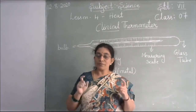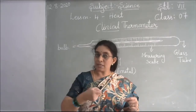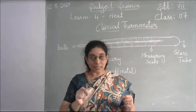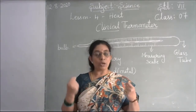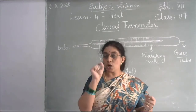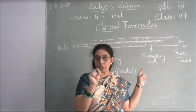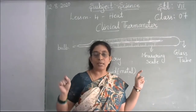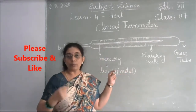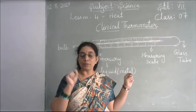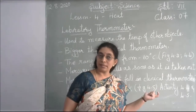Nowadays we have digital thermometers where you don't need to keep it in your mouth — you can place it in your armpits. The digital thermometer does not need to be shaken. There is no mercury in it, so we need not worry about mercury coming out. The bulb provides readings of your temperature directly.